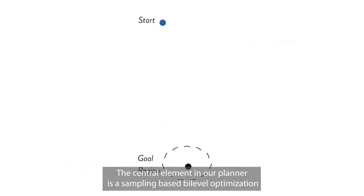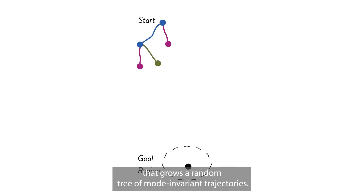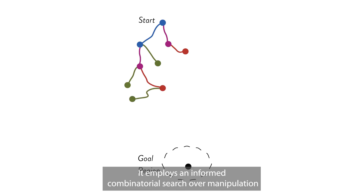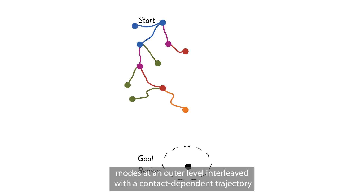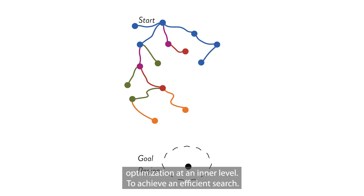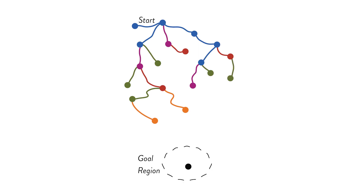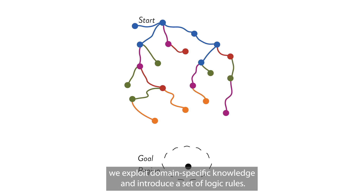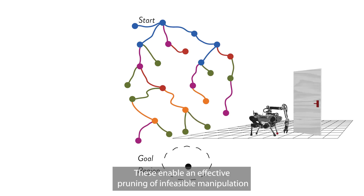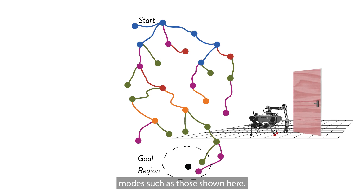The central element in our planner is a sampling-based bi-level optimization that grows a random tree of mode-invariant trajectories. It employs an informed combinatorial search over manipulation modes at an outer level, interleaved with a contact-dependent trajectory optimization at an inner level. To achieve an efficient search, we exploit domain-specific knowledge and introduce a set of logic rules. These enable an effective pruning of infeasible manipulation modes such as those shown here.